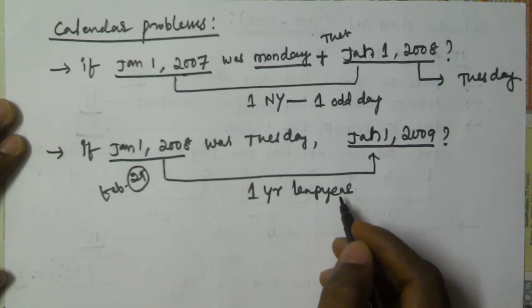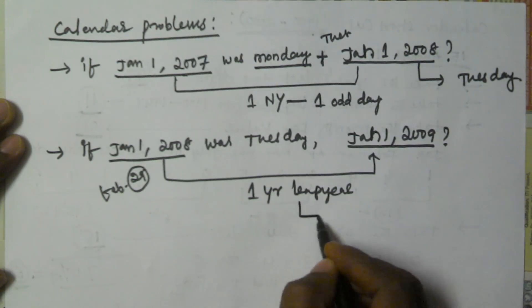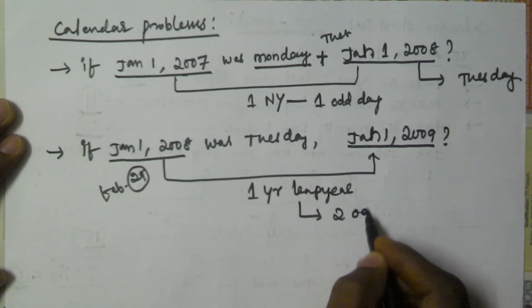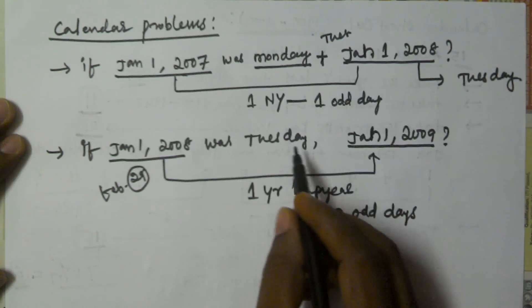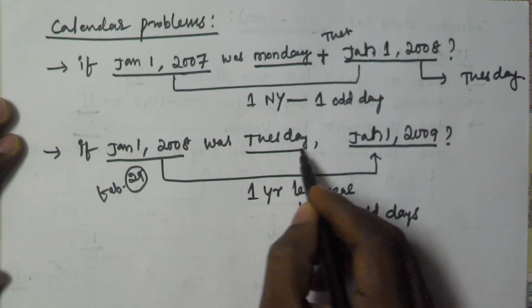So as we know, a leap year contains two odd days. Two odd days. So leap year contains two odd days, so we have to add plus two to Tuesday.